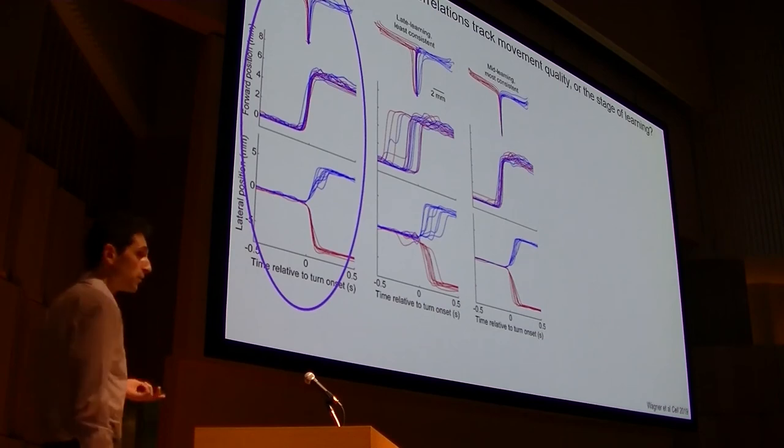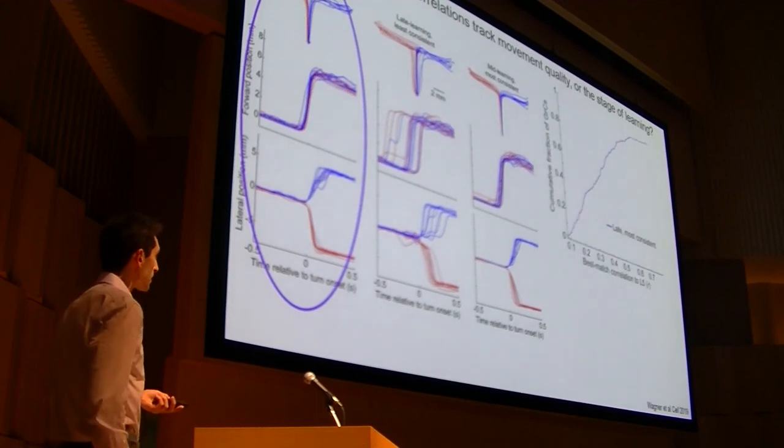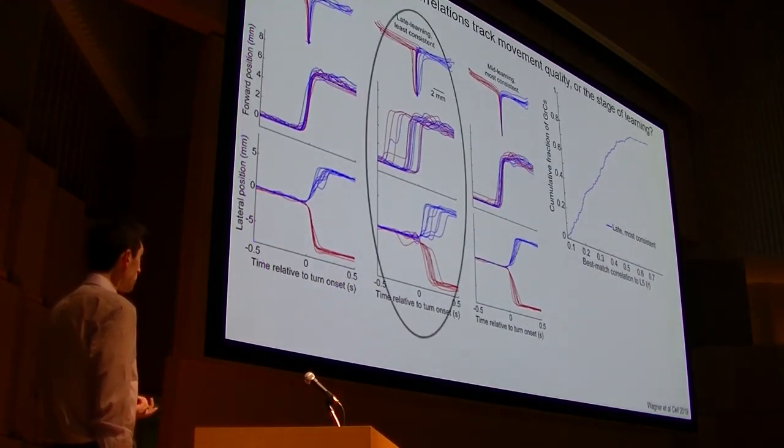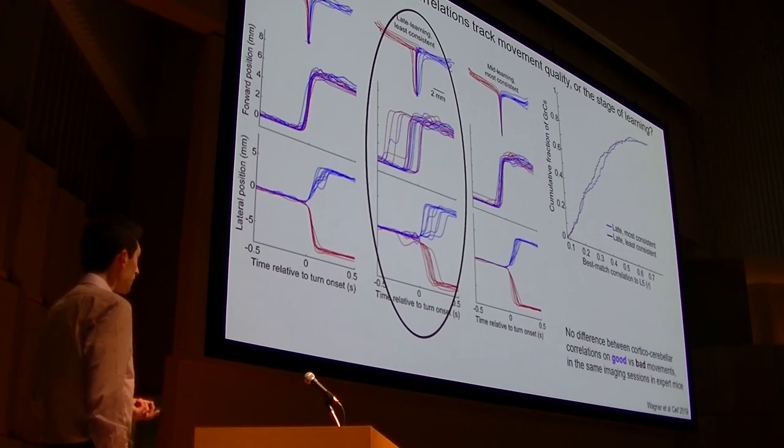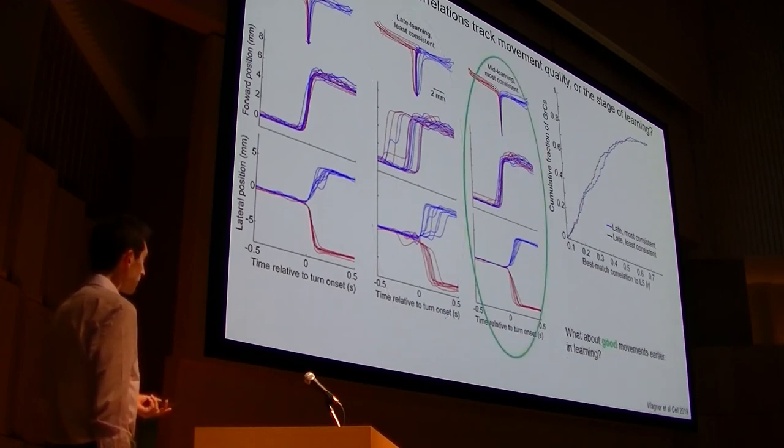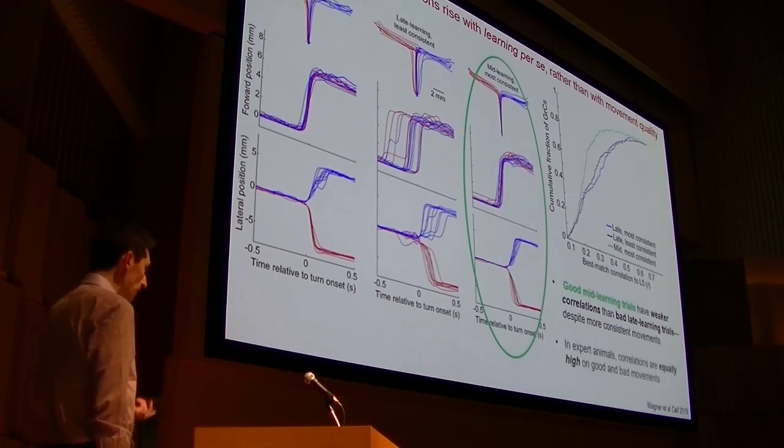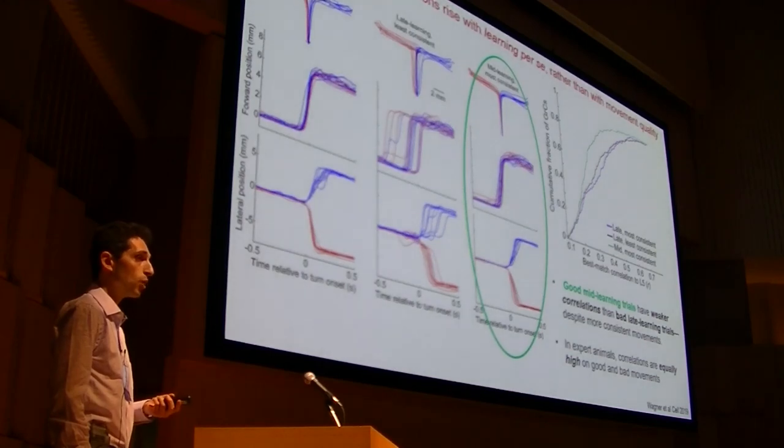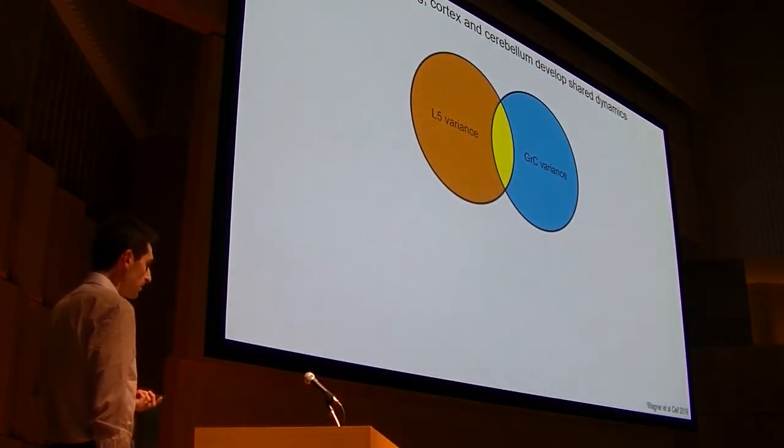All right, so what's the answer? Do these correlations track movement quality or stage of learning? So for this group of trials, what I do is take the neural activity on all the trials and concatenate it into a large data matrix, and I use a pairwise correlation coefficient between every pair of granule cells and layer five cells, and this is a cumulative distribution shown for each granule cell, what's the correlation for its best matched layer five neuron. If I compute the same thing for the crummy trials from the same imaging session, there's no difference in correlations. So changing the motor quality within a given imaging session is not enough to change the cortex-cerebellum correlations. All right, so what about these good-looking movements in the middle of learning? What you find is that the correlations are substantially weaker than the bad trials at the end of learning, whereas in the expert trials, the correlations are equally high in good and bad movements, and so the conclusion here is that the correlations are really rising with the learning state per se, rather than with the moment-by-moment variations in movement quality.